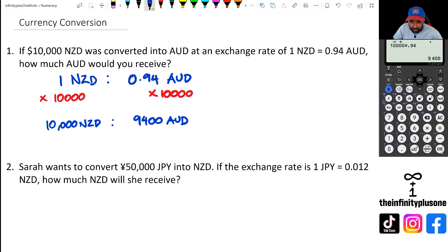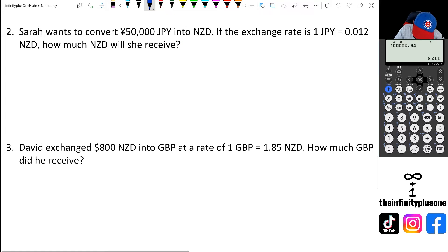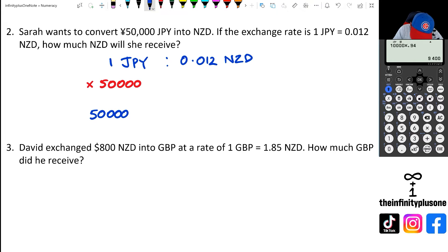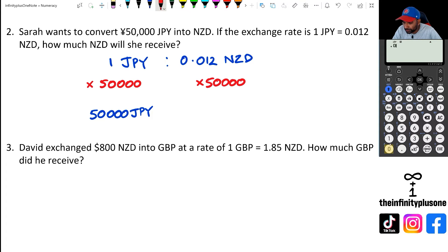Let's look at the Japanese yen. We've got one Japanese yen is roughly 0.012 New Zealand dollars. We're trying to figure out how many New Zealand dollars you'd get for 50,000 Japanese yen. That means we multiply both sides by 50,000, giving us 50,000 Japanese yen on one side. On the other side, we multiply 0.012 by 50,000, which equals 600 New Zealand dollars.